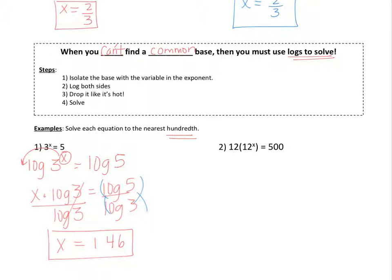Alright, let's try a different example. So, the first step is always to isolate the base. So, here's the base, 12, with the variable in the exponent. You cannot multiply these two things together. I know some of you want to, but we actually have to use order of operations. We would have to take 12, raise it to whatever power, then multiply it by 12. So, we actually need to divide both sides by 12 to get rid of the 12 on the outside.